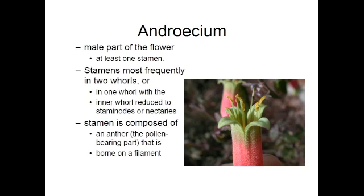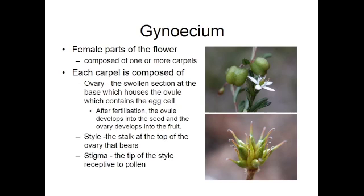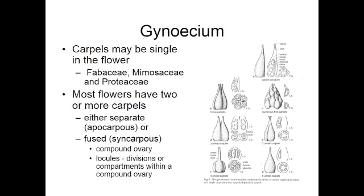The male parts of the flower are collectively referred to as the androecium, and each stamen consists of the anther — which is the pollen-bearing part — and the filament. Right in the middle of the flower is the female part of the flower, the gynoecium. This is comprised of one or more carpels with an elongated style and the stigmatic surface at the top that receives the pollen. These carpels may be single or they may be fused.